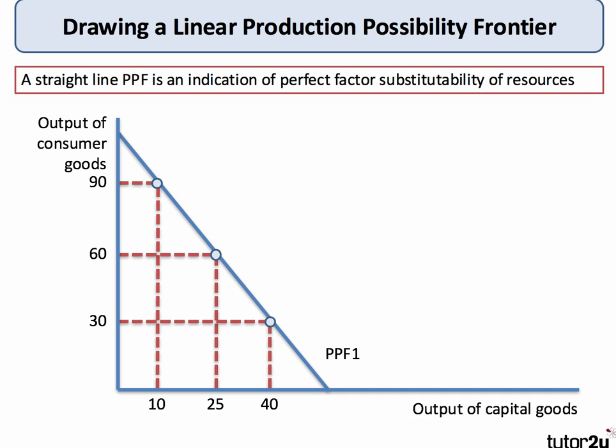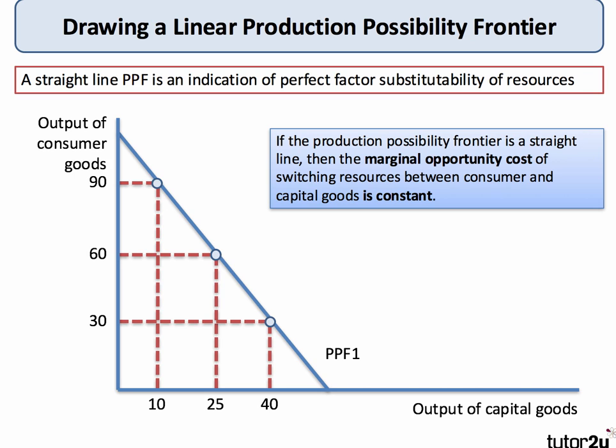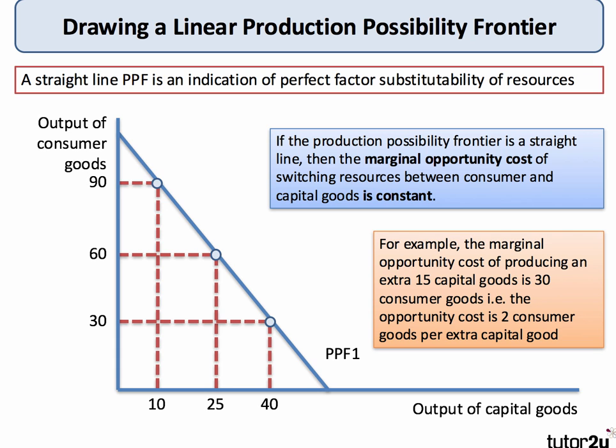Not every PPF is a curve — sometimes you can have a straight line PPF. A straight line PPF suggests that factors of production are substitutable with no loss of productivity. In this example, we have output of consumer goods (e.g. a car) on the y-axis and output of a capital good (e.g. a computer) on the x-axis. As we move down the PPF, the opportunity cost stays the same. A linear PPF means the marginal opportunity cost of switching resources between consumer and capital goods is constant — for example, 15 extra capital goods costs 30 consumer goods, or two consumer goods per extra capital good.